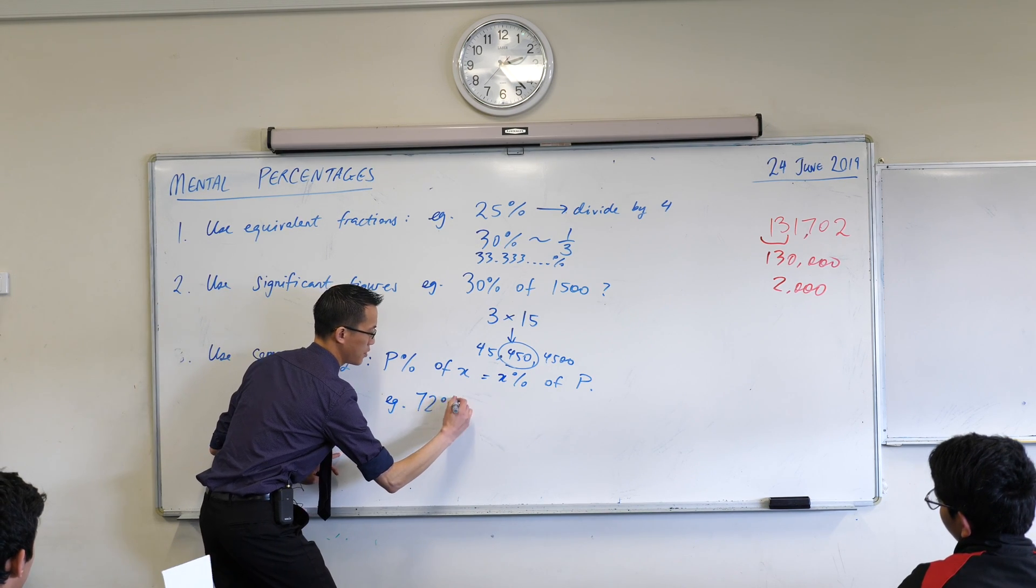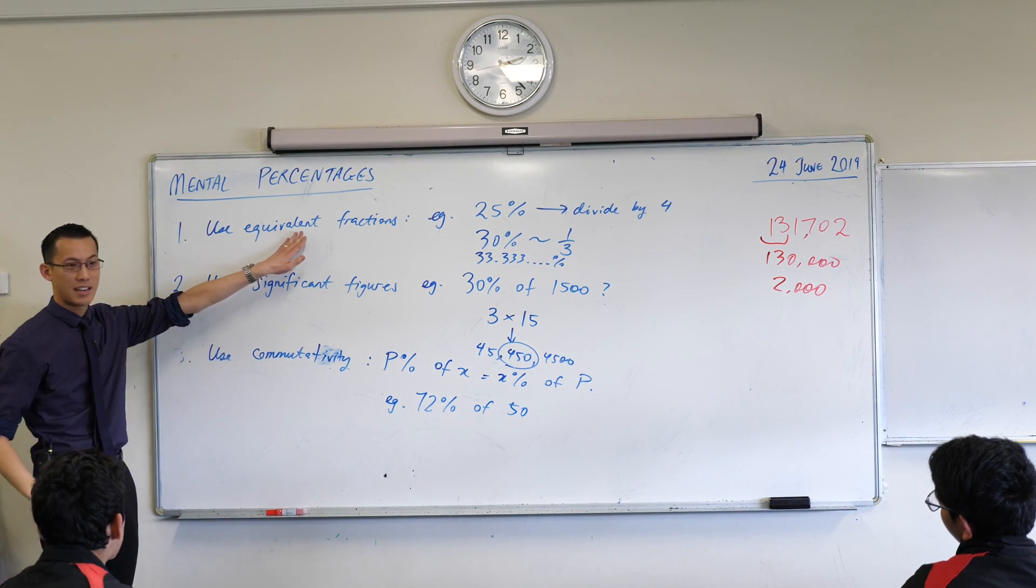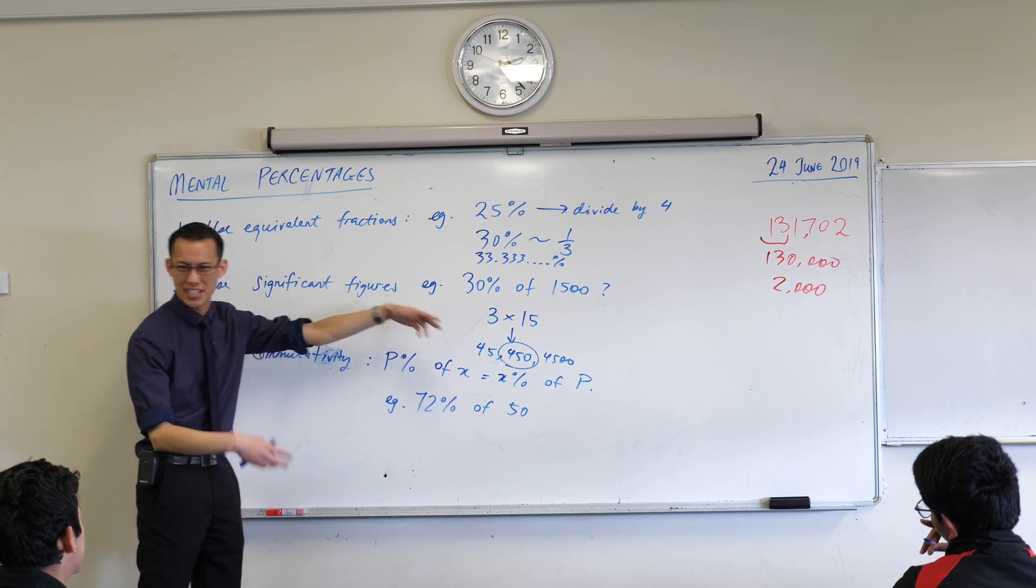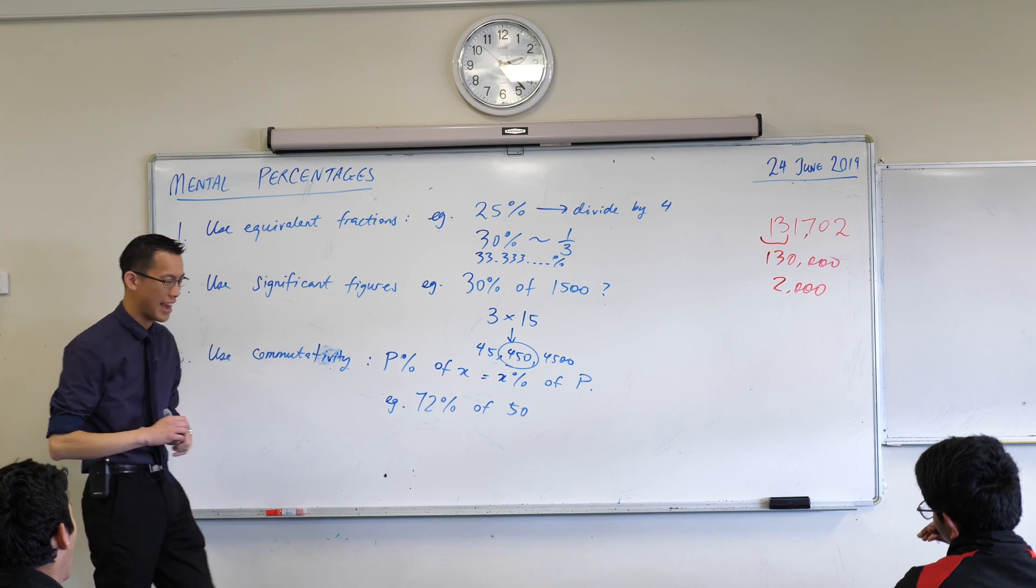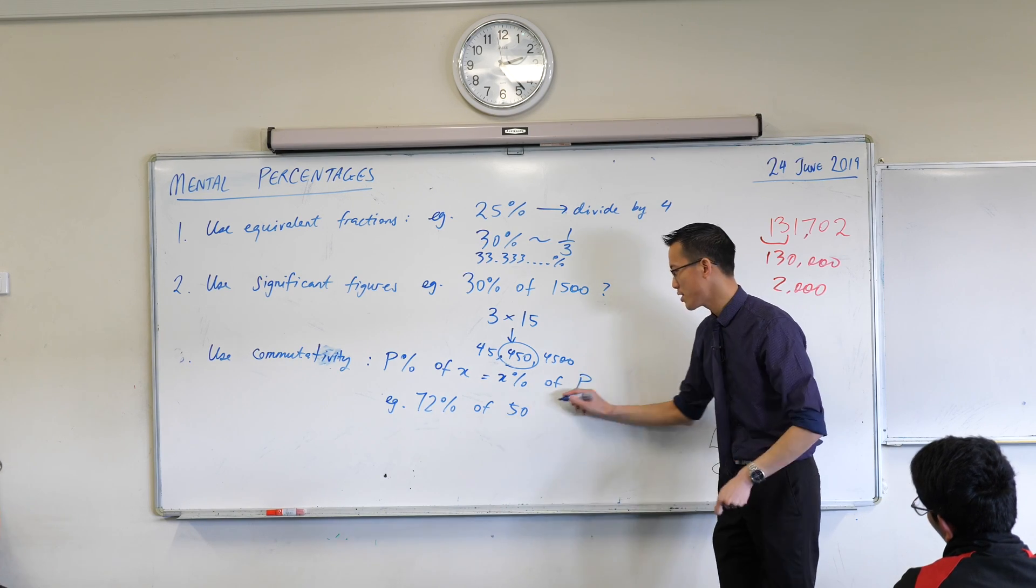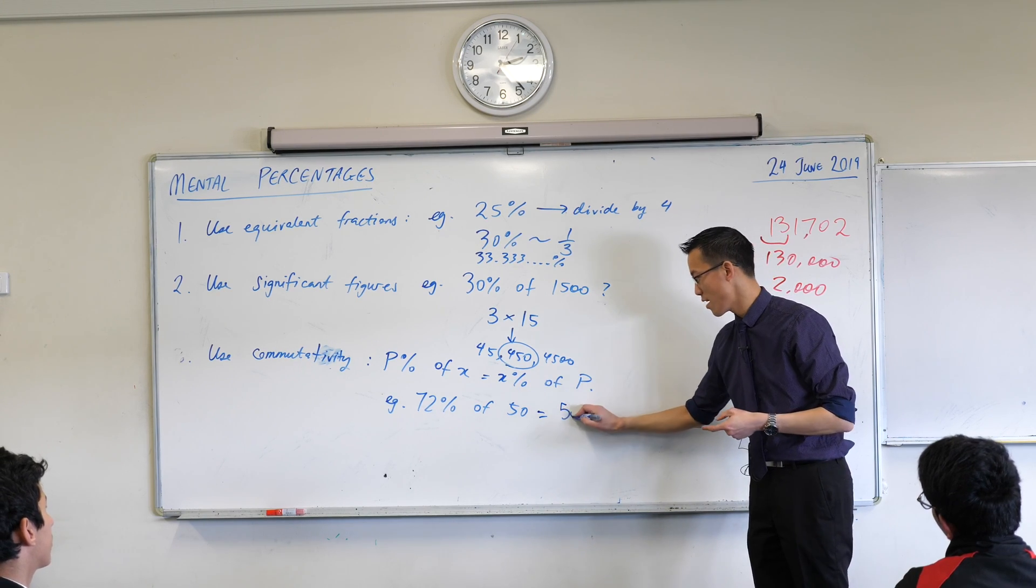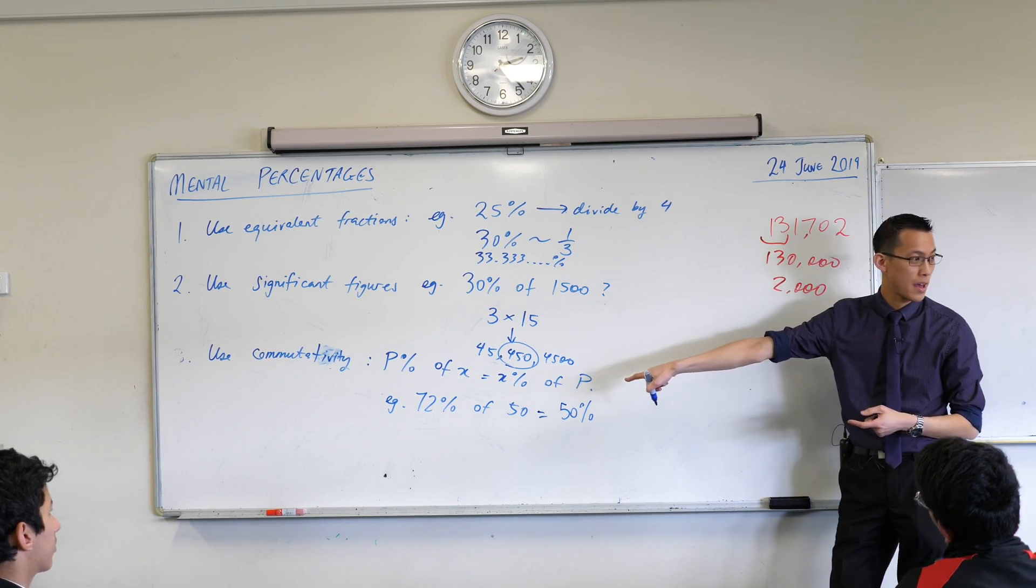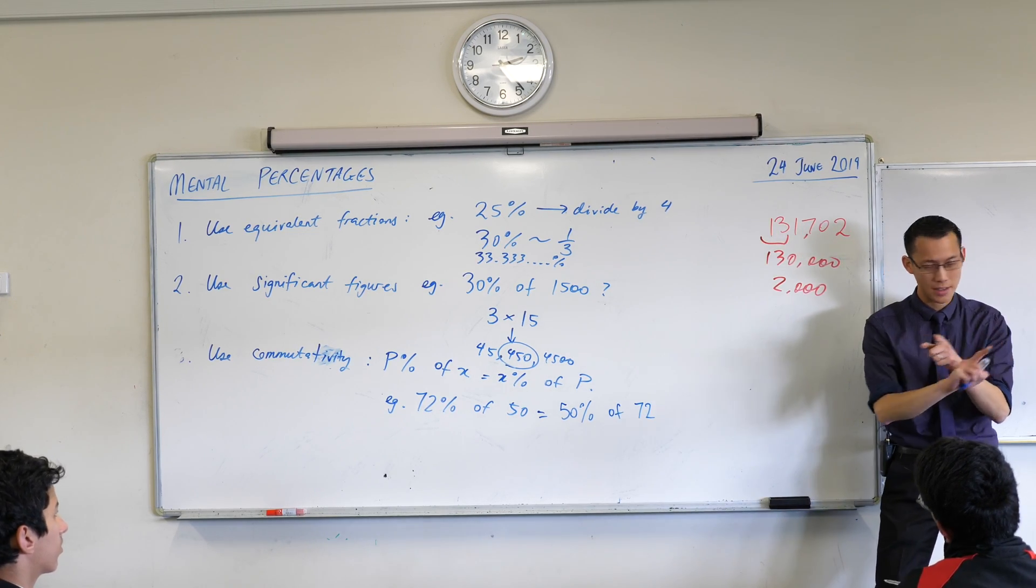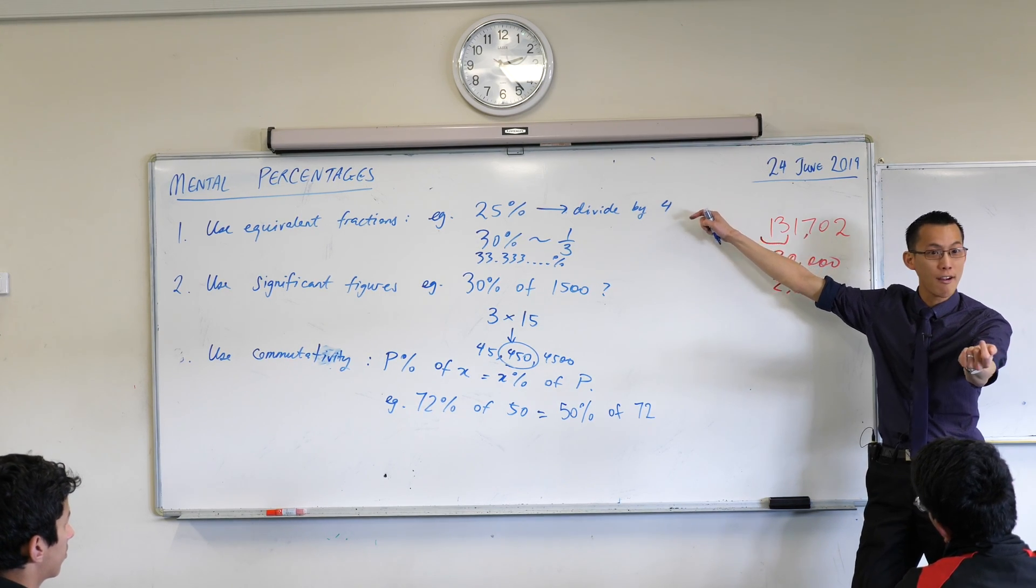Let's try 72% of 50. Now I don't know about you, but 72%, that's not a nice equivalent fraction, and 72 times 5, the significant figures are still quite tricky. But because multiplication is commutative, this is really 72% times 50, you can actually swap these numbers over and get something nice and easy. It's the same as 50% of 72. We know what 50% is, it's a nice equivalent fraction. It's a half.